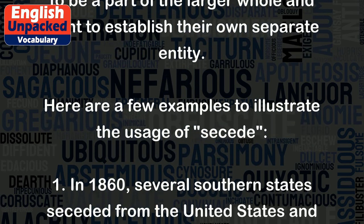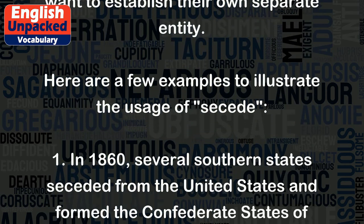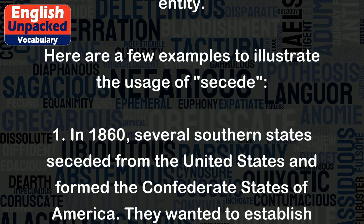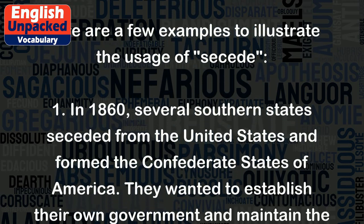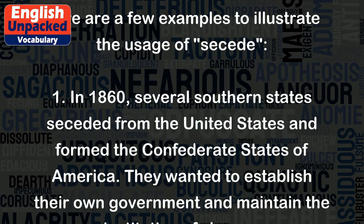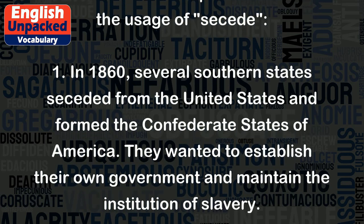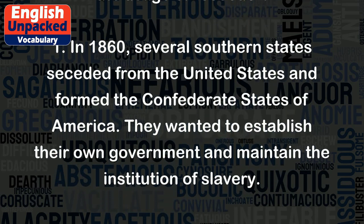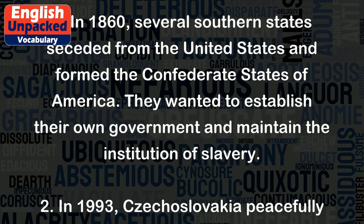1. In 1860, several southern states seceded from the United States and formed the Confederate States of America. They wanted to establish their own government and maintain the institution of slavery.